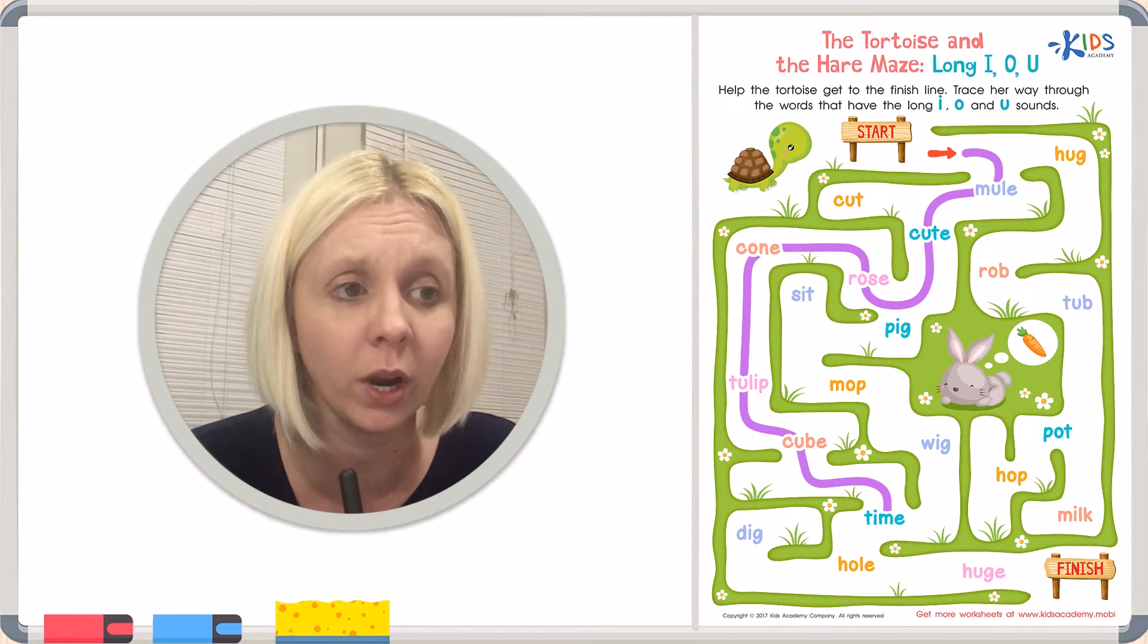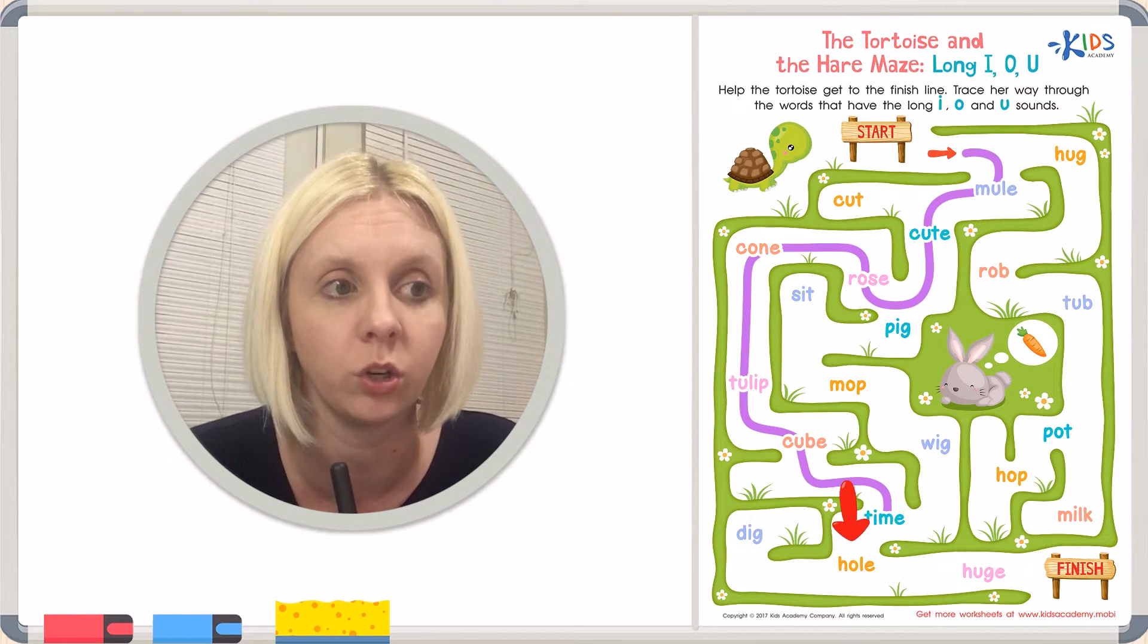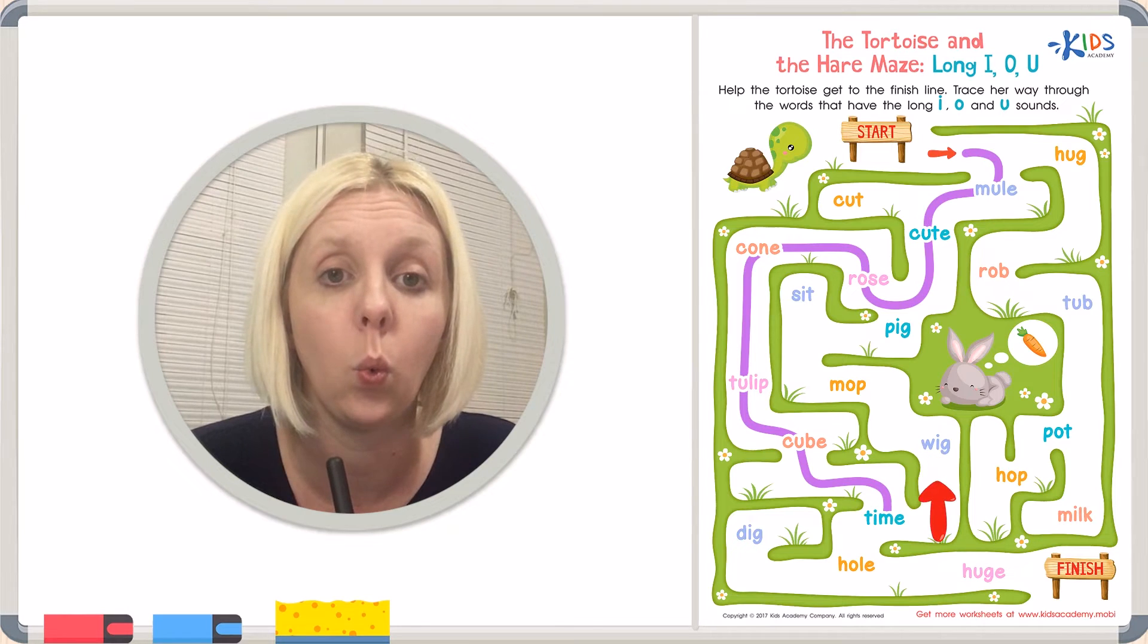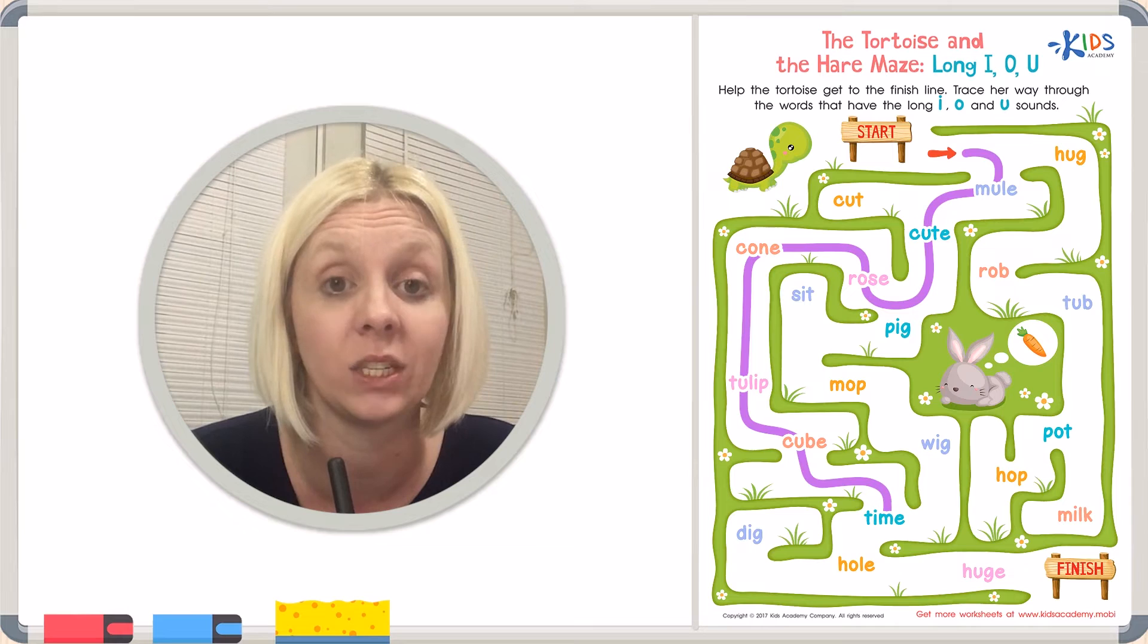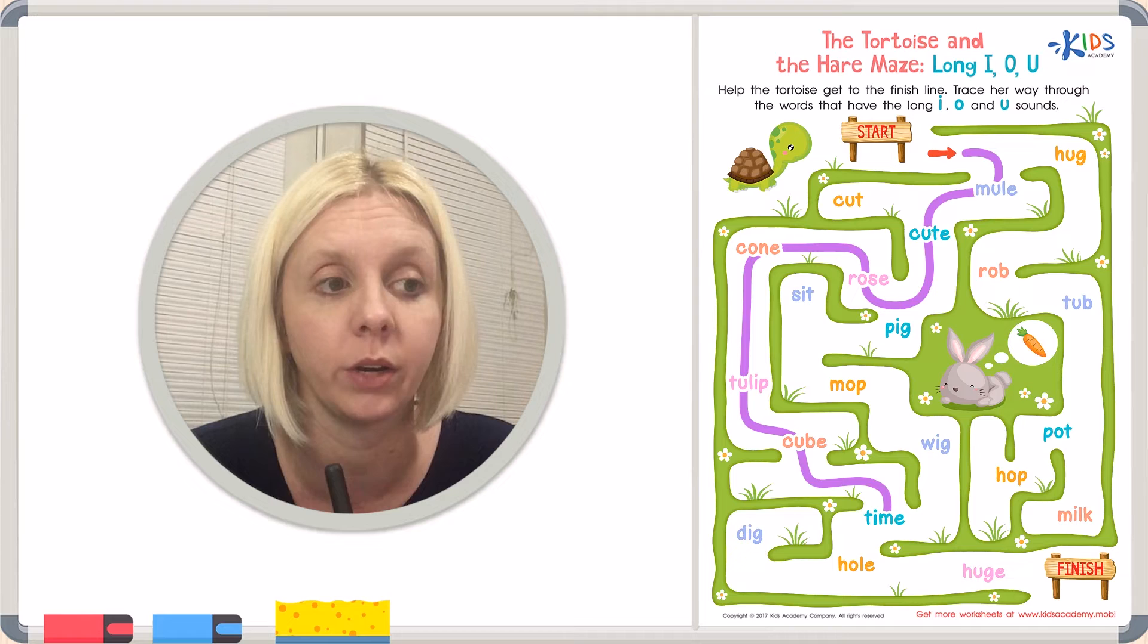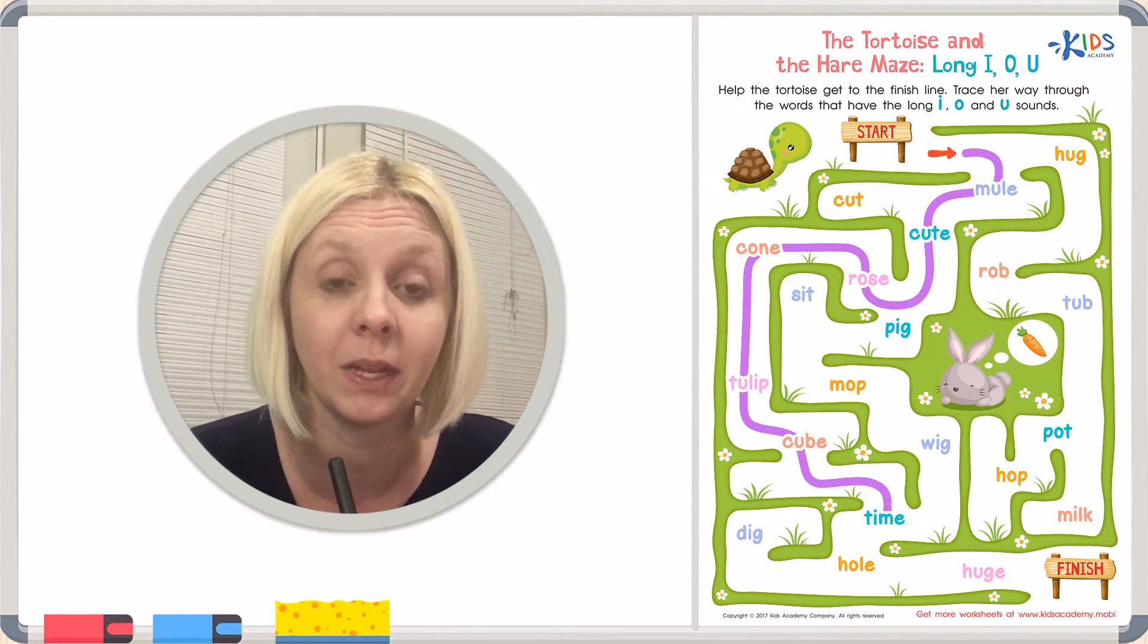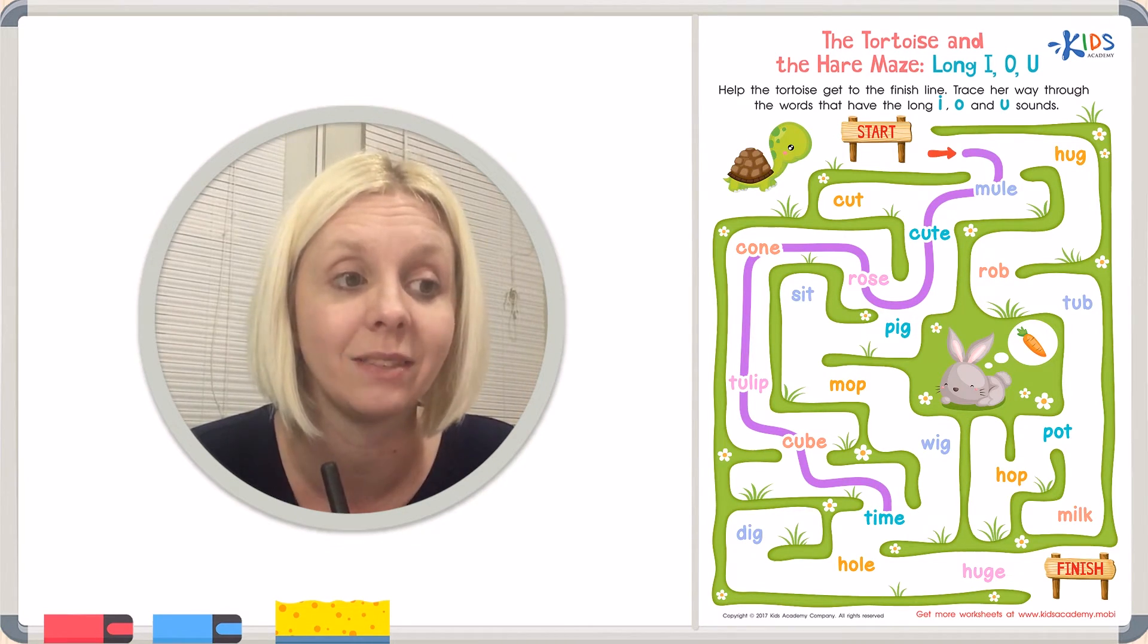And now we're going to come down this way or actually we could go over here. We could go back the other way. I'm not sure which way to go. Are we going to go to this word or this word? I started to go this way, but let's make sure we've got wig. It doesn't say I. It's not wig. It's wig. So that one, I don't think that's the way to go. I think we were going the right way down here. Let's check. This is the word hole. Does O say its name? Let's listen. Hole. Yeah. It makes that long sound. So we are going the right way. We're going to go through hole and we're almost to the finish line.